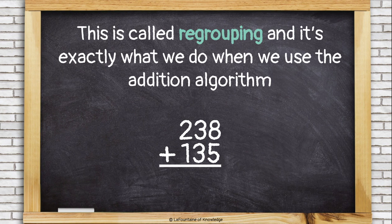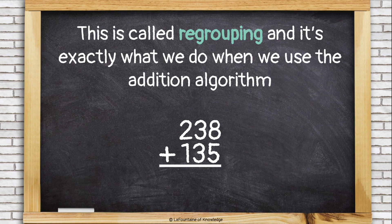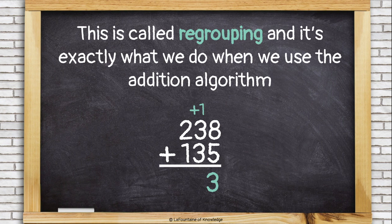This is called regrouping, and it's exactly what we do when we use the addition algorithm. Let's take a look. 8 plus 5 is 13, but I can't put a 13 in the ones place of my answer.